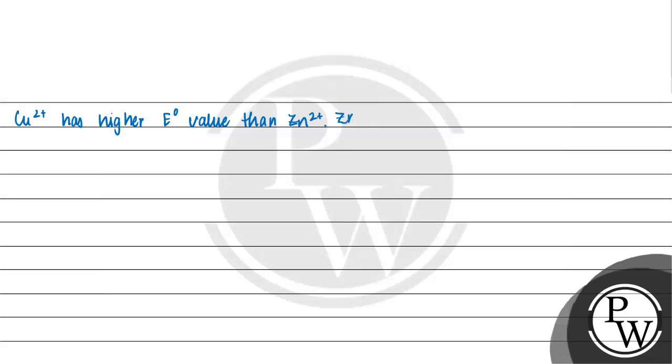So, Zn2+ has higher oxidation potential than Cu2+. So, it will go easily from Zn to Zn2+ plus 2 electrons.